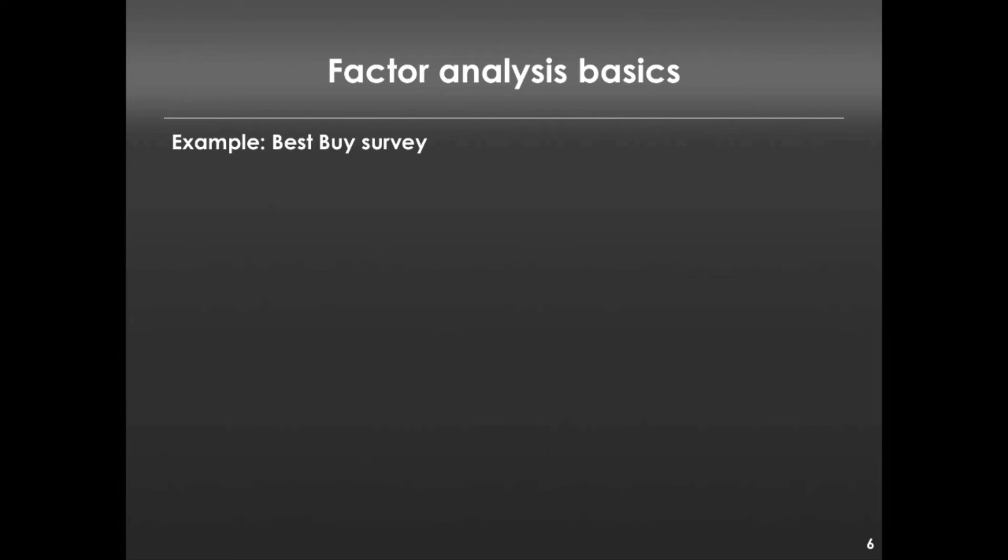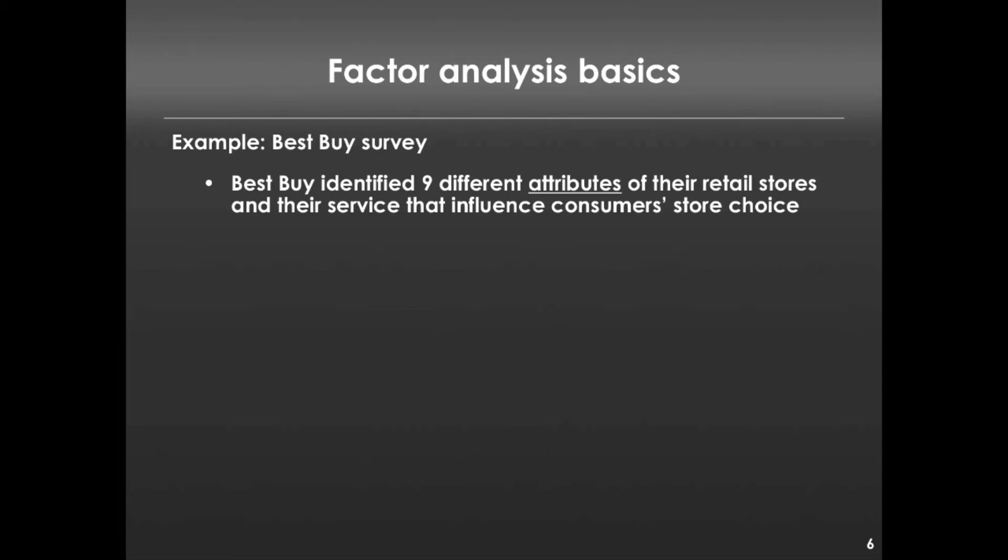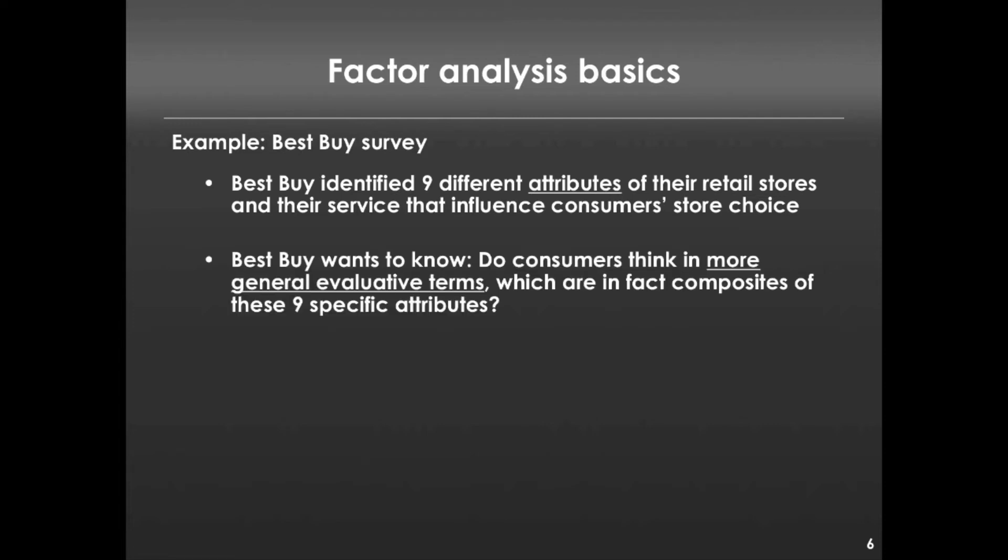Imagine there was a survey conducted by Best Buy, and Best Buy identified nine different attributes of their retail stores and their service that influence consumer store choice, in other words, where they shop. Best Buy wants to know, do consumers think in more general evaluative terms, which are in fact composites of these nine specific attributes? In other words, is it really that there are nine unique different things that people care about? Or do those nine things represent something smaller, some smaller subset of dimensions?